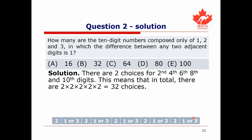To count how many such numbers exist, we use the multiplicative principle. We have two choices for the second digit, two for the fourth, two for the sixth, two for the eighth, and two for the tenth digit. This gives 2 × 2 × 2 × 2 × 2 equals 32 different choices.